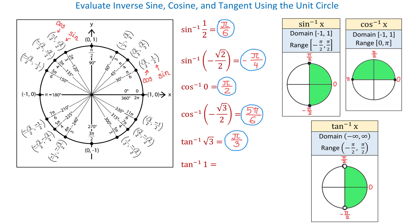In the last example, we need to evaluate inverse tangent of 1. In quadrant 1, square root of 2 over 2 divided by square root of 2 over 2 is 1. And in quadrant 3, negative square root of 2 over 2 divided by negative square root of 2 over 2 is also 1. So we have two angles — pi over 4 and 5 pi over 4 — whose tangent is 1. The correct answer is pi over 4, because this angle is between negative pi over 2 and positive pi over 2. Here we have all the answers, and we could also write them in degrees instead of radians.